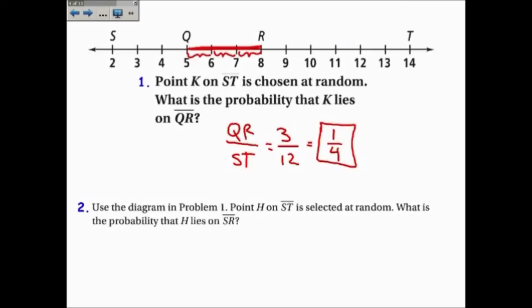Please pause the video and try number 2 on your own. If point H is on ST selected at random, what is the probability that H lies on SR? Well, SR out of ST. SR has a length of 8 minus 2.